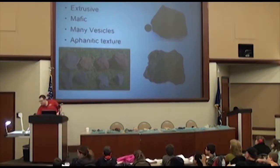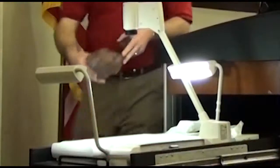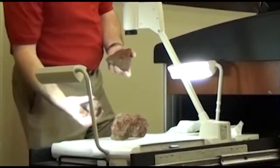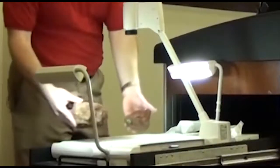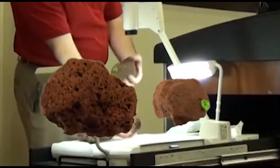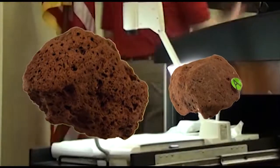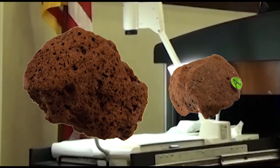Let me show you some pieces of scoria I brought. All of the pieces I brought are reddish colored — obviously yours is more blackish usually. The point is it's really light and not whitish or light gray. How does it get its color? It gets its color from the minerals that are in it.